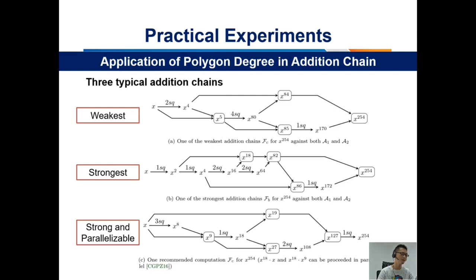With these two measurements, we find three typical addition chains. The first one is the weakest addition chain for both adversaries. The second one is the strongest addition chain for both adversaries, and it can also be executed in parallel.